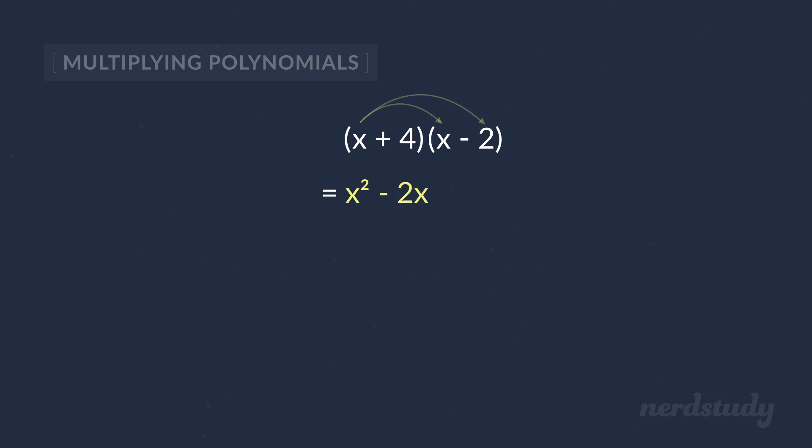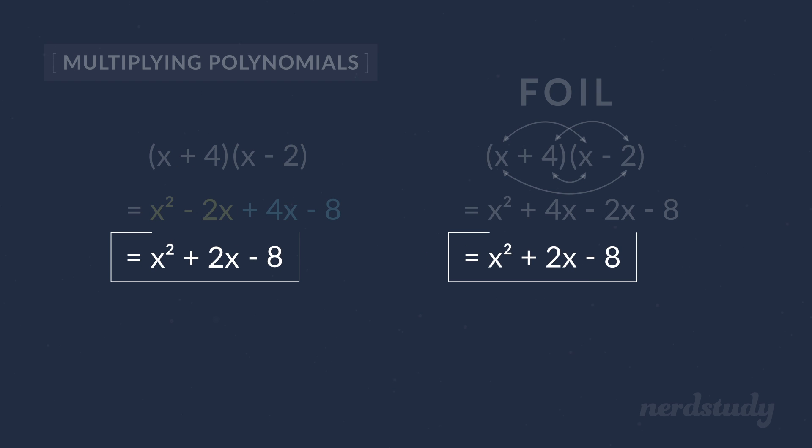Similarly, we take the 4 and multiply it to each term here and we get plus 4x minus 8. So we end up with x squared plus 2x minus 8, which is the same as what we got when we used the FOIL method.